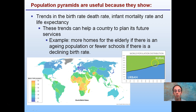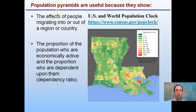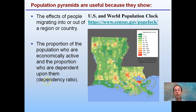World population distribution: urban versus rural — urban plus rural have to equal 100%. Notice a slow, predicted increase in the urban environment and a decrease in the rural environment. Our births per thousand show Africa being at the elevated level. Population pyramids are also useful because they show the effects of people migrating into and out of a region or country. The dependency ratio — the portion of a population who are economically active versus those dependent on them — can also impact that. Clicking this world population clock shows how rapidly increasing the world's population is overall.